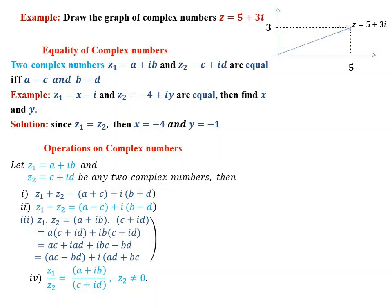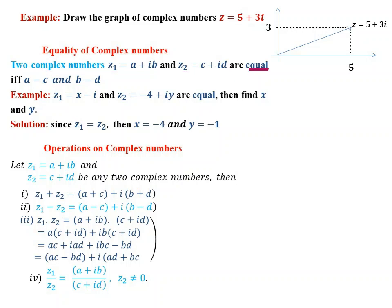Equality of complex numbers: Two complex numbers z1 equals a plus ib and z2 equals c plus id are equal if and only if a equals c and b equals d. That means if the corresponding real parts as well as the corresponding imaginary parts are equal, then the two complex numbers are equal.